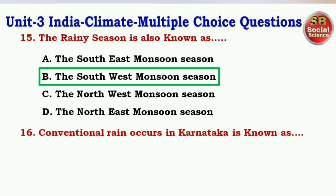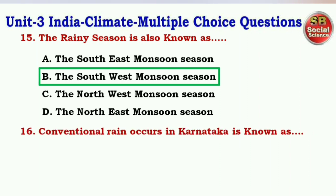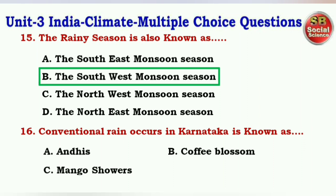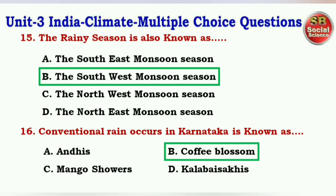Next question: Conventional rain that occurs in Karnataka is known as — options are Andhi, Coffee Blossom, Mango Showers, Kala Baisakhi. The right answer is option B — Coffee Blossom.